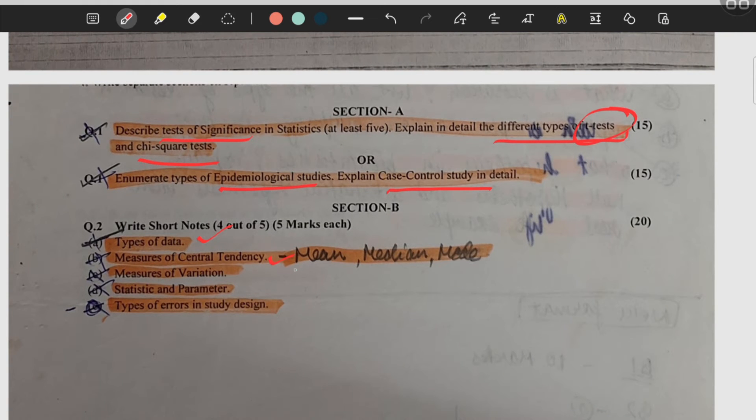Then types of data, central tendency - mean, median, mode comes under it. Then measures of variation, statistic and parameter, types of error.